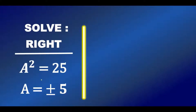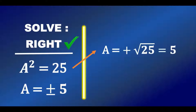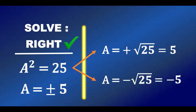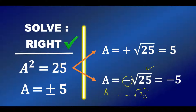Now if you want to solve an equation like a² = 25, then a will be plus or minus 5. You get this because either a = +√25 = 5, or a = -√25 = -5. You can write it this way because when you multiply minus √25 by minus √25 you still get 25.